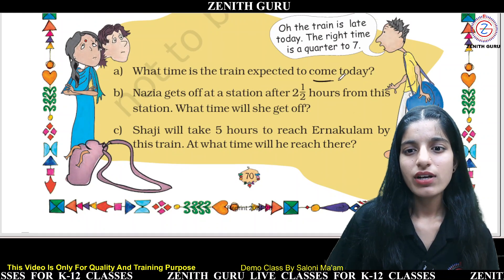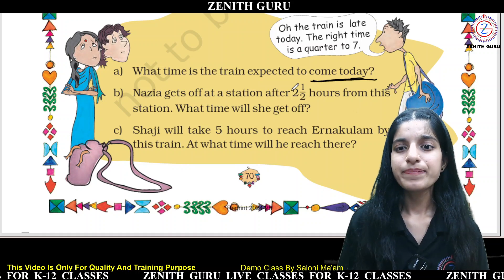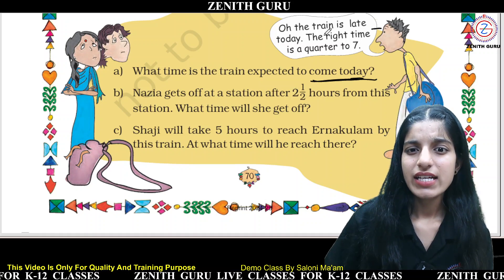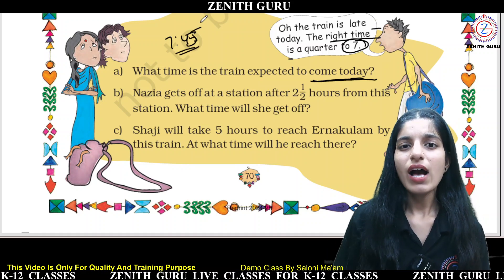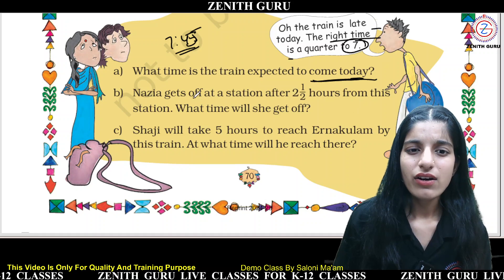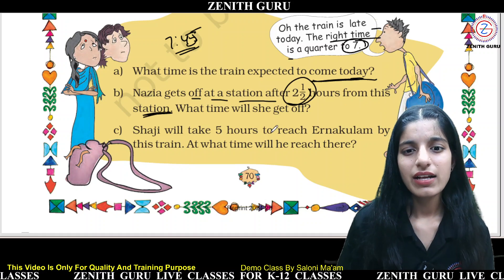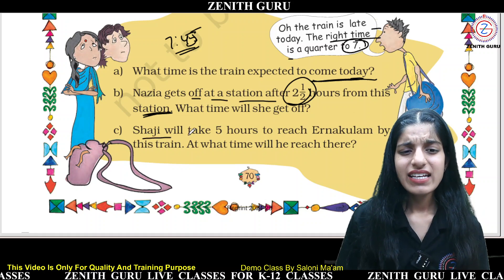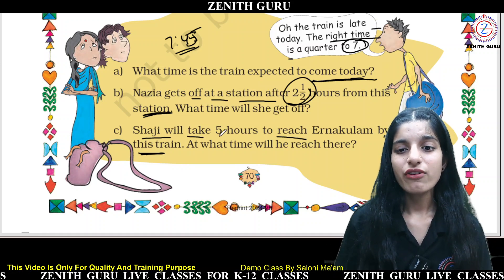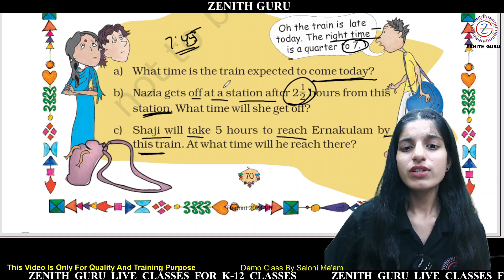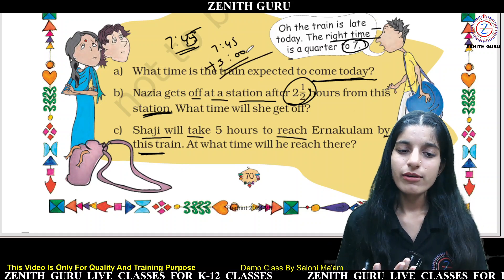What time is the train expected today? The right time is a quarter to 7 — meaning the train was supposed to arrive at 6:45. But the train is late today. Nazia gets off at a station after two and a half hours from this station. Aziya will take five hours to reach Ernakulam by this train. To find the arrival time, add 5 hours to 6:45.